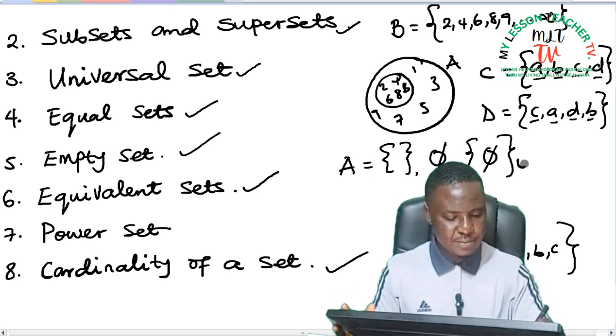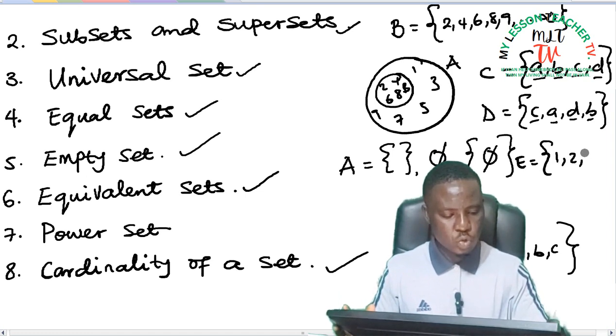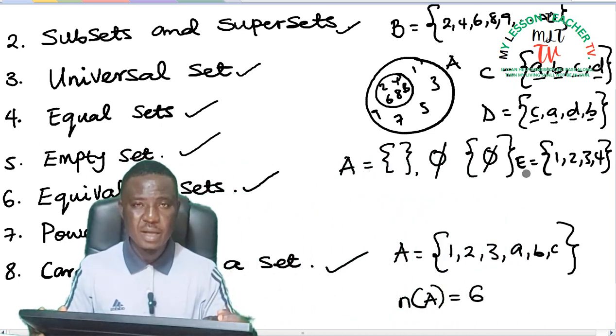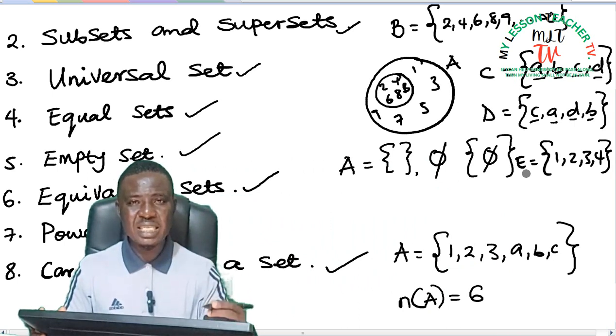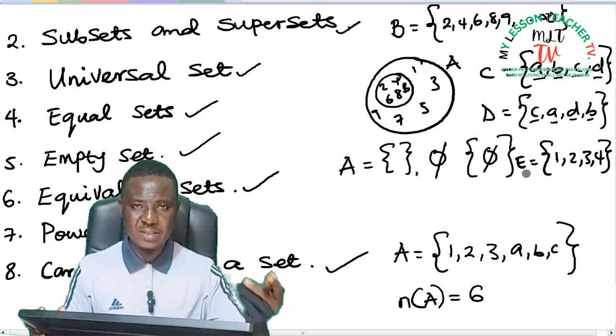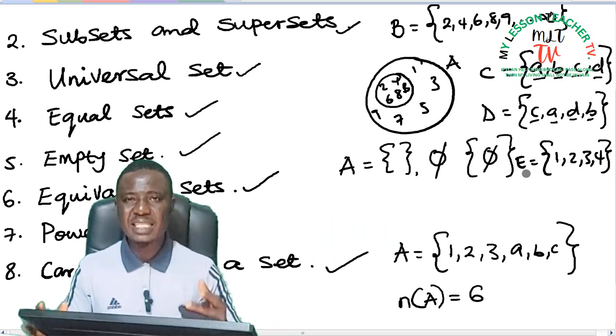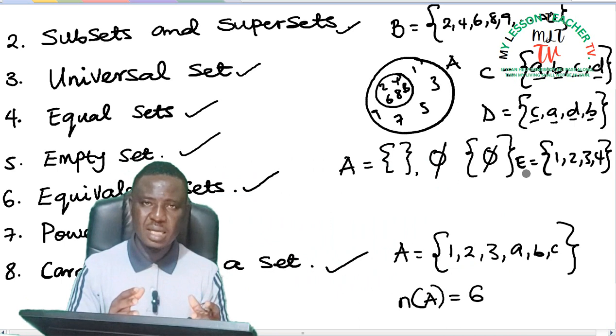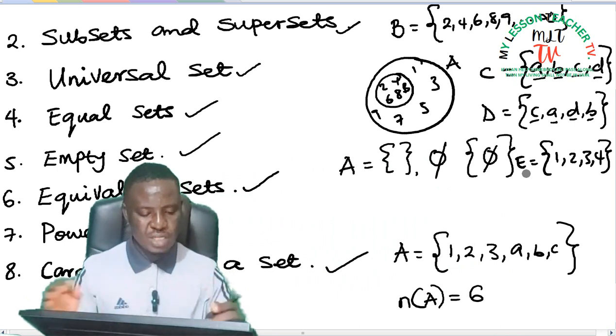if I have another set E to be made up of 1, 2, 3, 4, I would say that set C is equivalent to set E. Reason being that their cardinality is said to be the same. Their cardinality is 4. So two sets that have the same number of elements can be said to be equivalent sets.